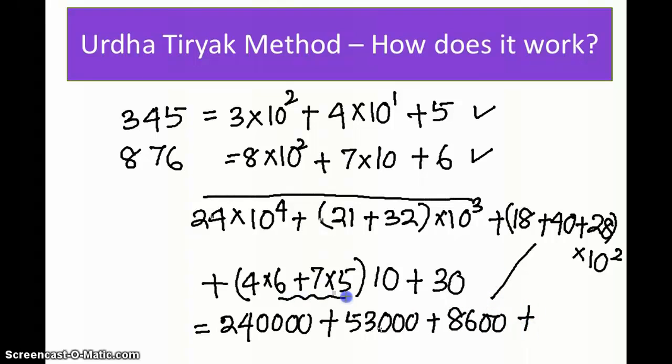And this term is 590 plus 30. You add all these things, you will get your result as whatever we got previously—that is 302,220.